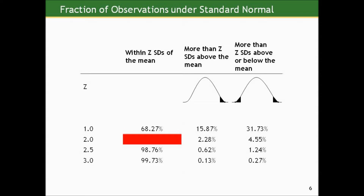In that second column, if we go to the same row that says 2, it tells us that if we went two standard deviations above the mean and put our finger there, the area to the right of our finger would be about 2.28%. The story is completed by that third column, which says if we went two standard deviations in either direction and only considered the area outside of that range, it would be 4.55% or about 5%.